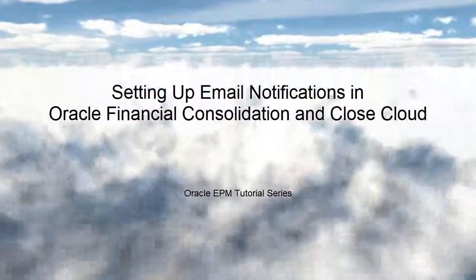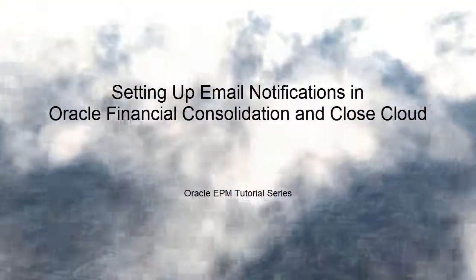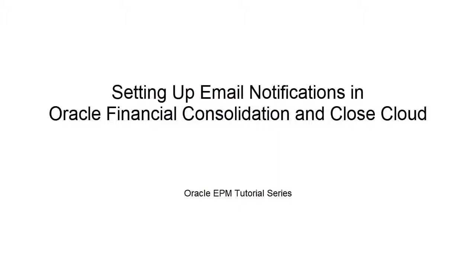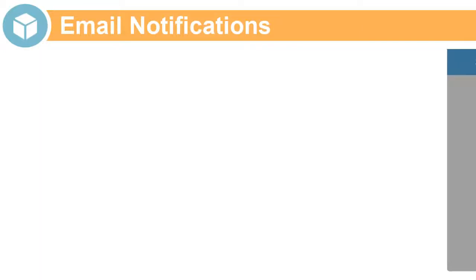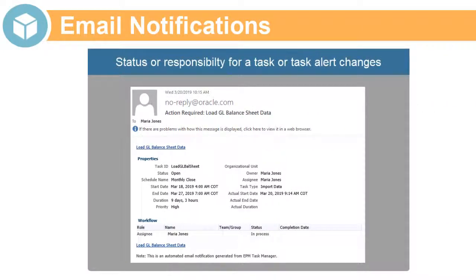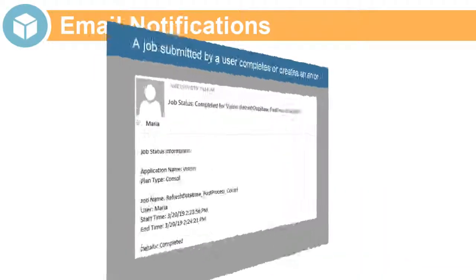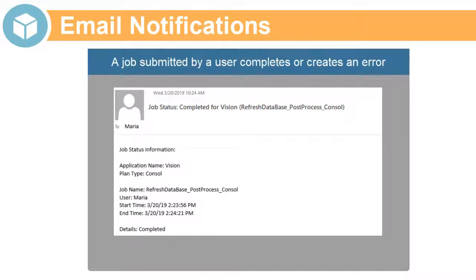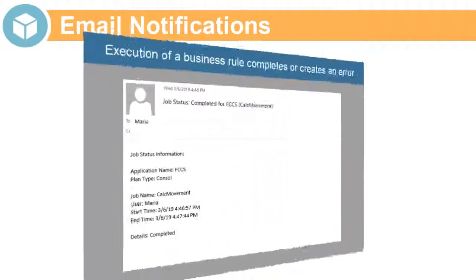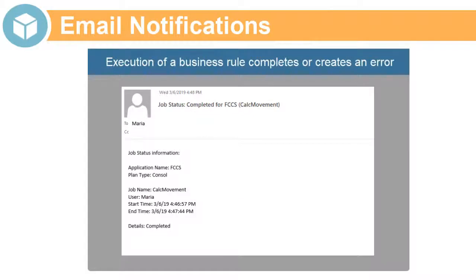In this tutorial, we'll show you how to set up email notifications in Oracle Financial Consolidation and Close Cloud. Users can receive email notifications when status or responsibility for a task or task alert changes, ownership of an approval unit changes, a job submitted by a user completes or creates an error, or execution of a business rule enabled for notifications completes or creates an error.